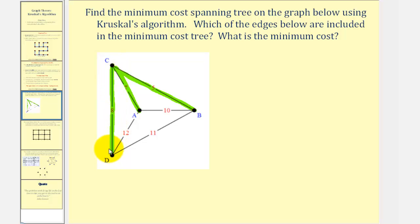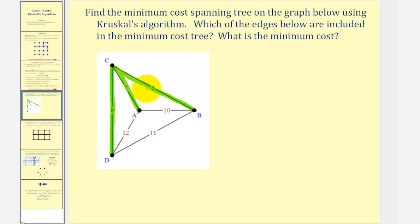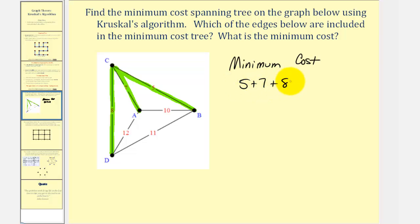We're done because now there's a path from any vertex to any other vertex without any circuits, so this is a spanning tree. To find the minimum cost, we sum the weights of these three edges: five plus seven plus eight, which equals 20.